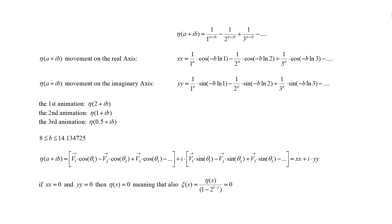The first animation will be when the real part of the eta function is 2. The second animation will be when the real part is 1. The third animation will be when the real part is 0.5. On all three animations, the imaginary part range will be from 8 to 14.134725. The first animation shows absolute convergence with no zero. The second shows absolute convergence with a zero of the eta function. The third shows a zero of the zeta function, and on later chapters I will explain why.